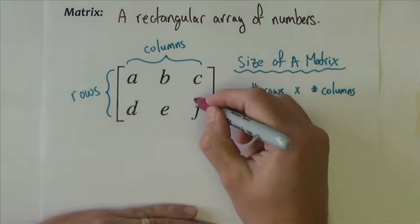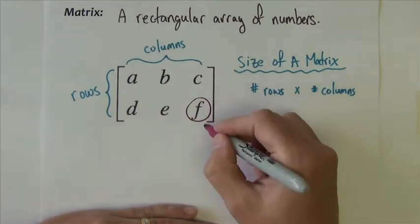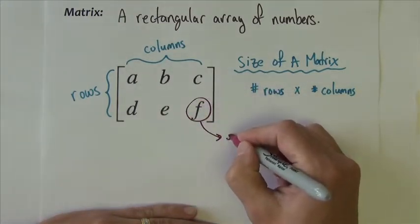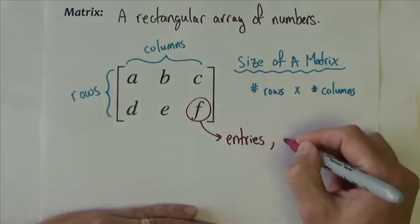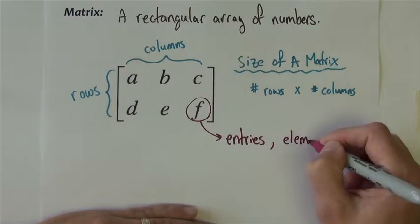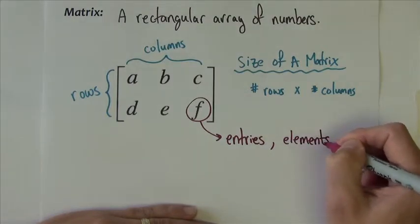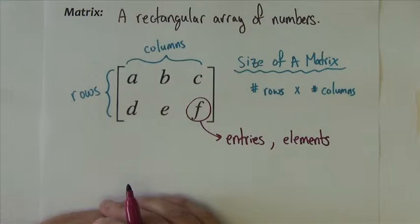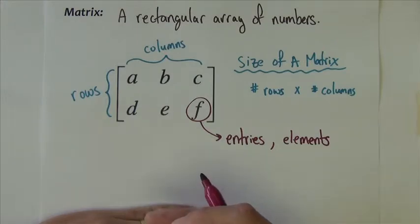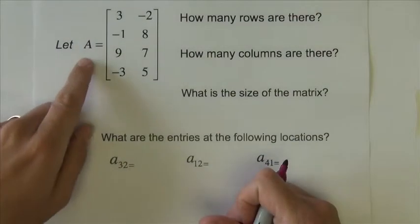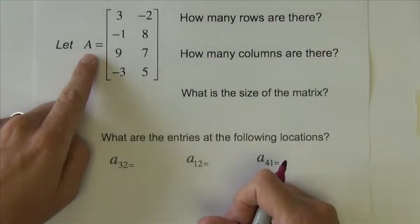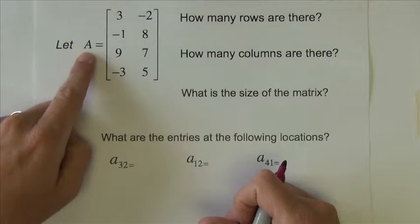All of the individual numbers within a matrix we can call entries or elements — sometimes you hear that word too, but I typically just use entry. Now let's go to the next slide; we'll see an example that will cement some of this vocabulary. Here we see matrix A. Generally, matrices are denoted by capital letters.